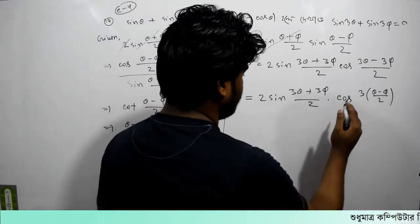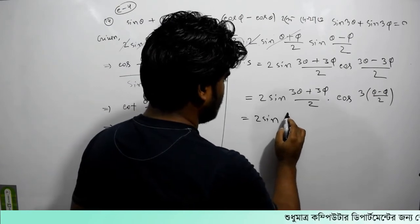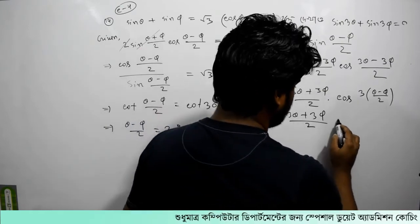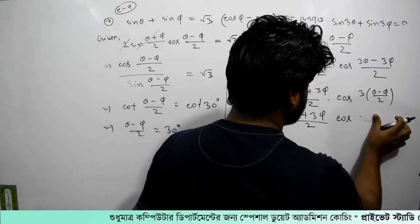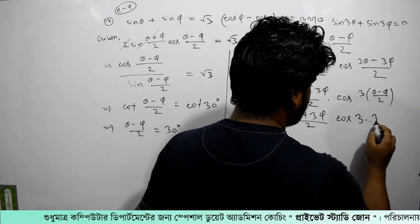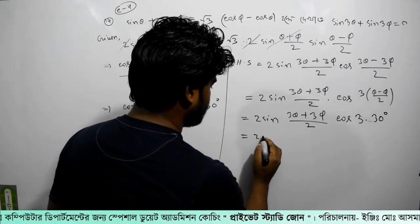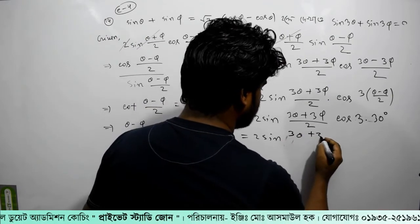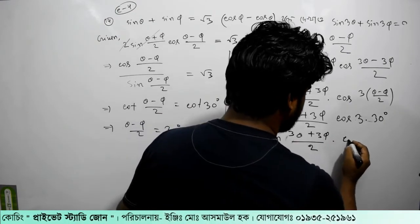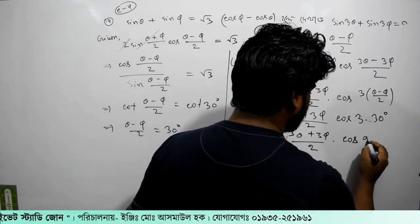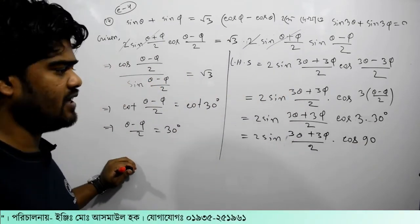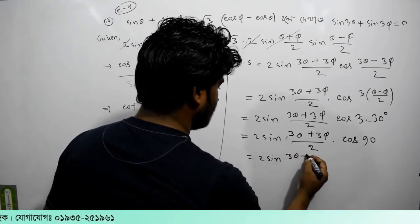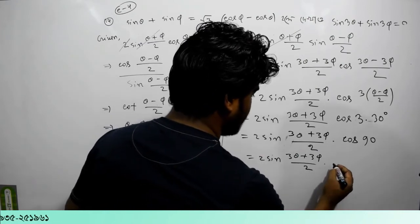So we have 2 sin (3 theta plus 3 phi)/2 times cos 3 into 30 degrees, which becomes cos 90 degrees. Since cos 90 equals 0, the entire expression equals 0.